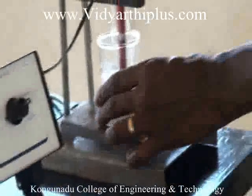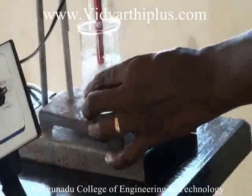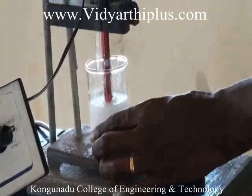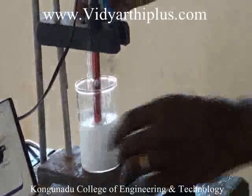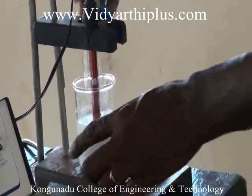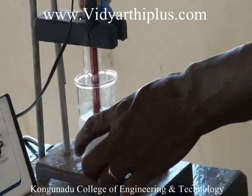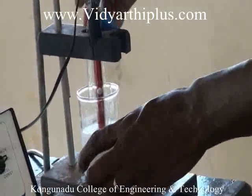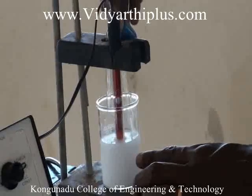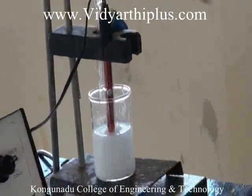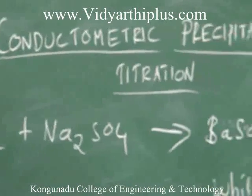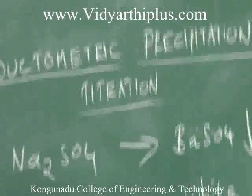The white precipitate shown on the beaker indicates the neutralization of barium chloride with sodium sulfate. The complete white precipitate is formed, and sodium chloride, which is soluble in water, is not shown here. The white precipitate only shows the barium sulfate formation. This is the basic principle of precipitation titration.